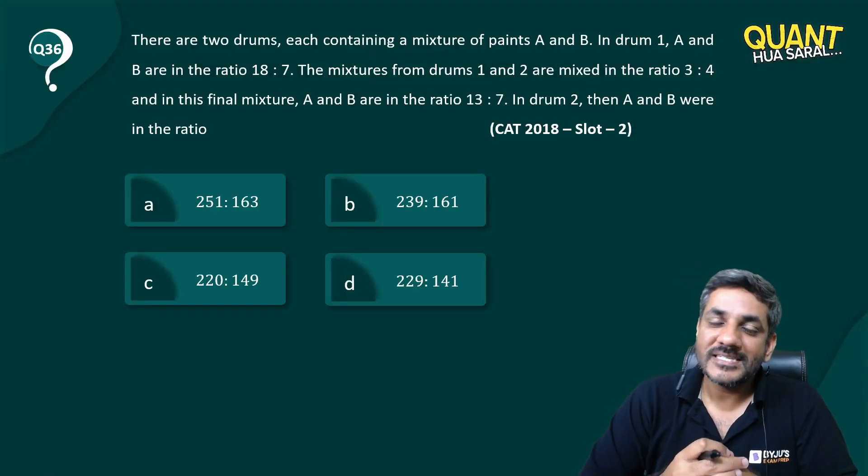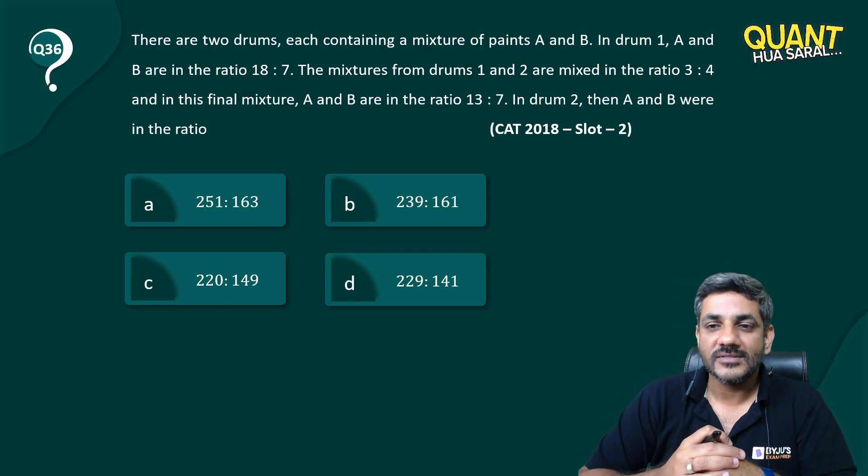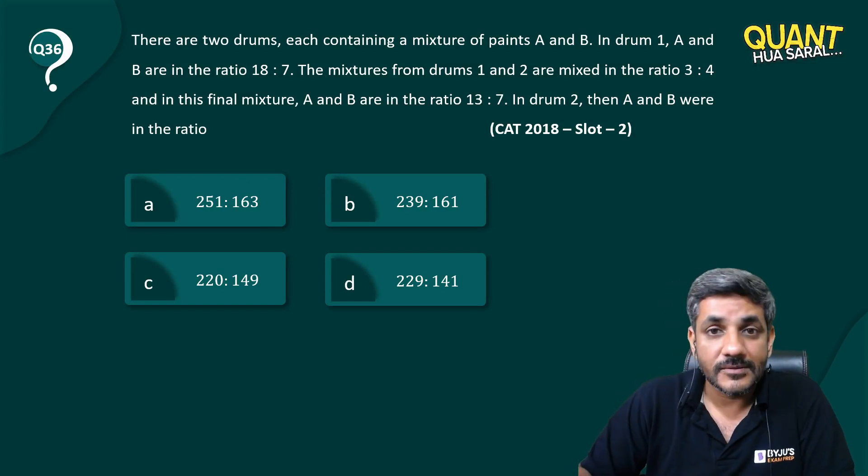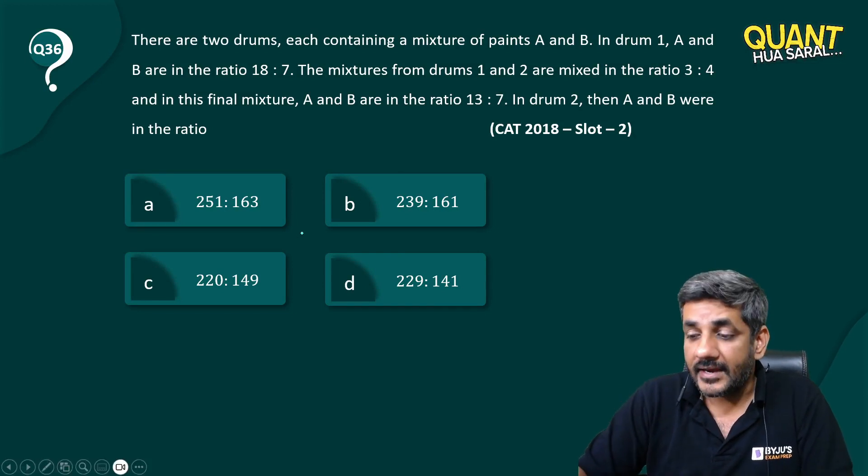Hi there, welcome back to question number 36 of this series. Once again, a question from CAT 2018 slot 2. Let's have a look. There are two drums, each containing a mixture of paints A and B. In drum 1,